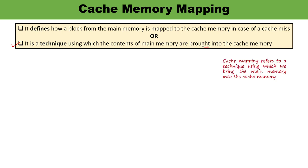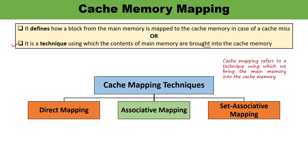There are three types of cache memory mapping: direct mapping, associative mapping, and set associative mapping. In this video I will be talking about set associative mapping. The previous two videos were about direct mapping and associative mapping. But to understand set associative mapping, you must know about direct and associative mapping.